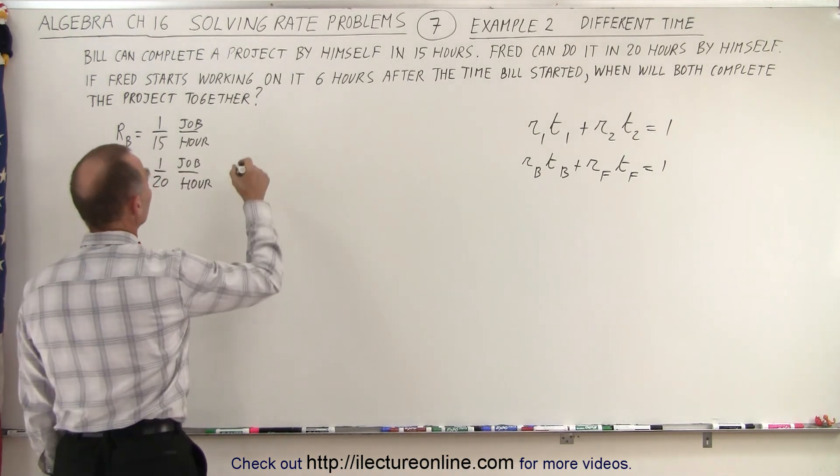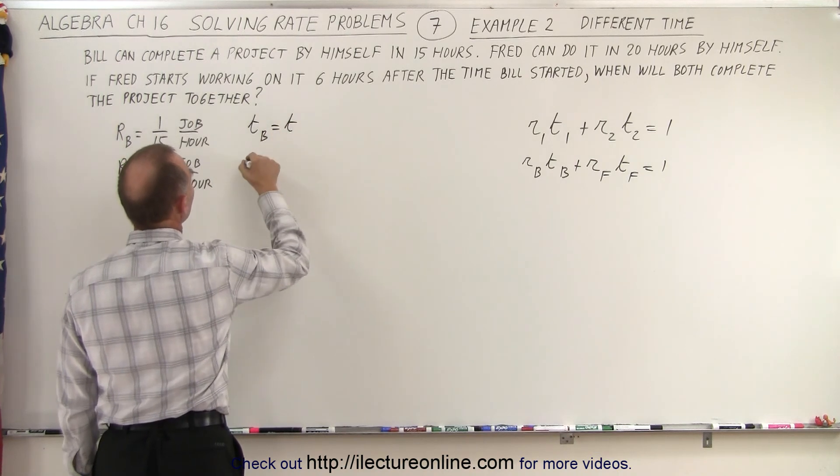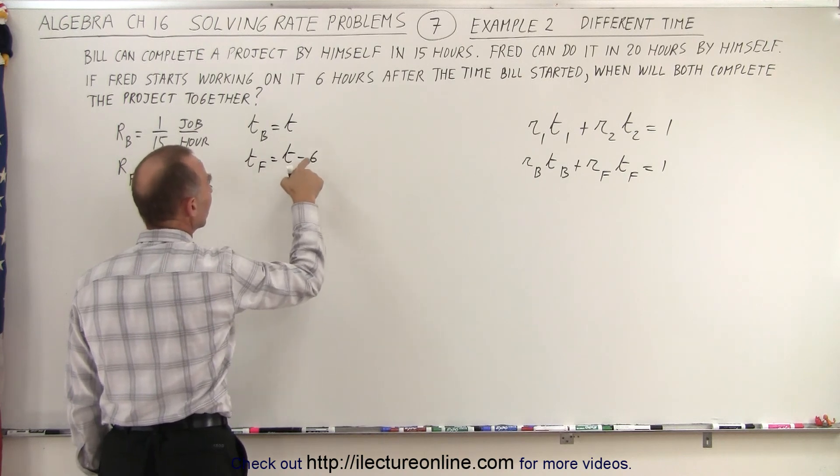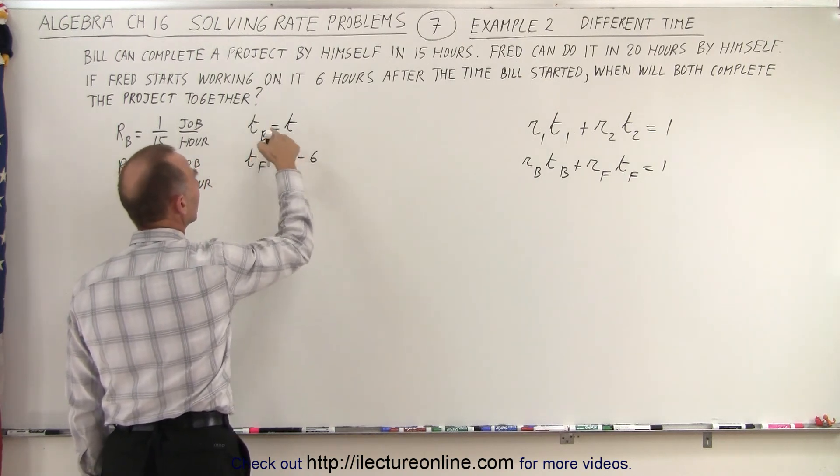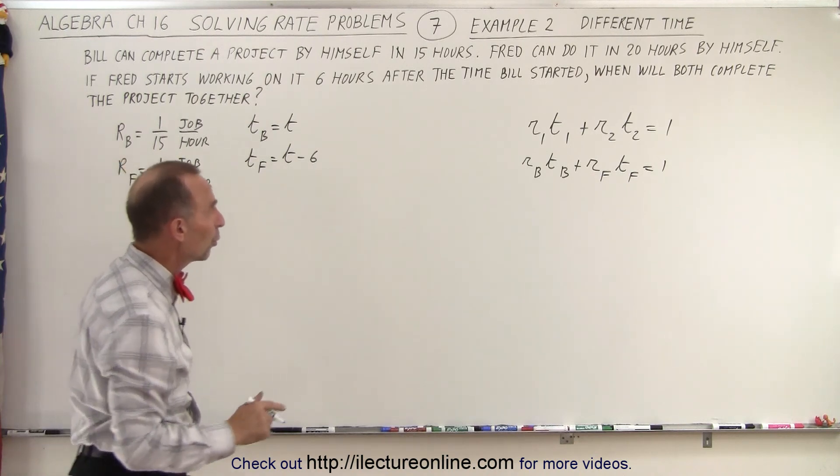Well let's see here, if Fred joins in six hours later then Fred spends six hours less than Bill to work on the task. So if the time for Bill is equal to t, then the time for Fred is equal to t minus six because Fred is spending six hours less than Bill to do the job. Now we have everything we need to plug into the equation.